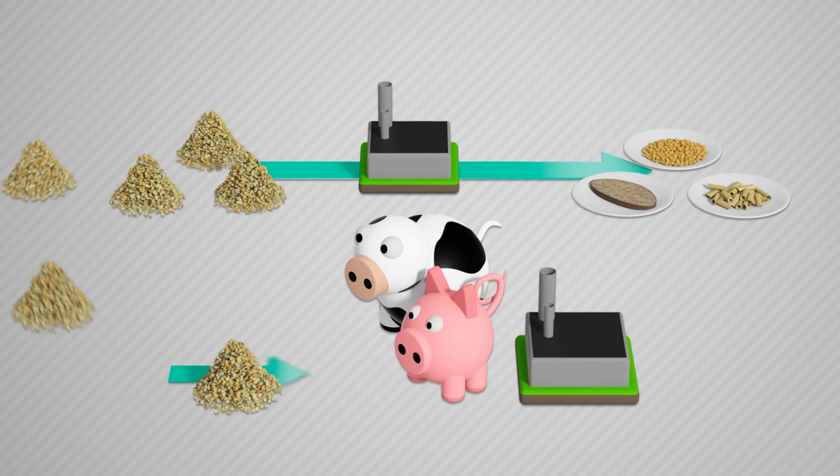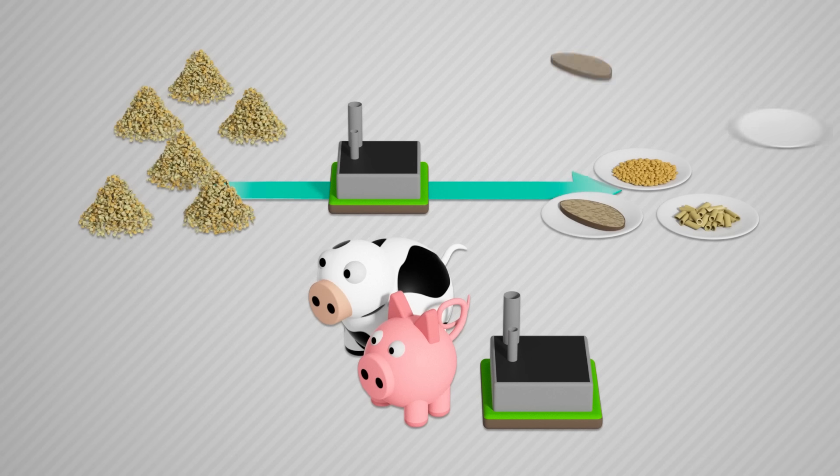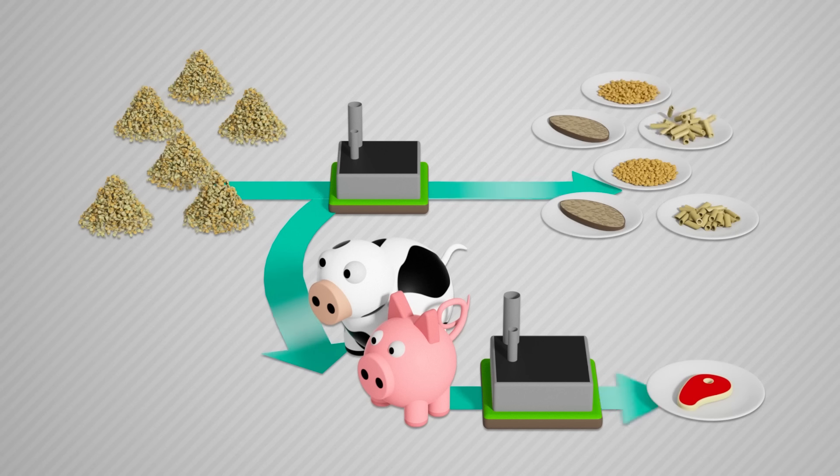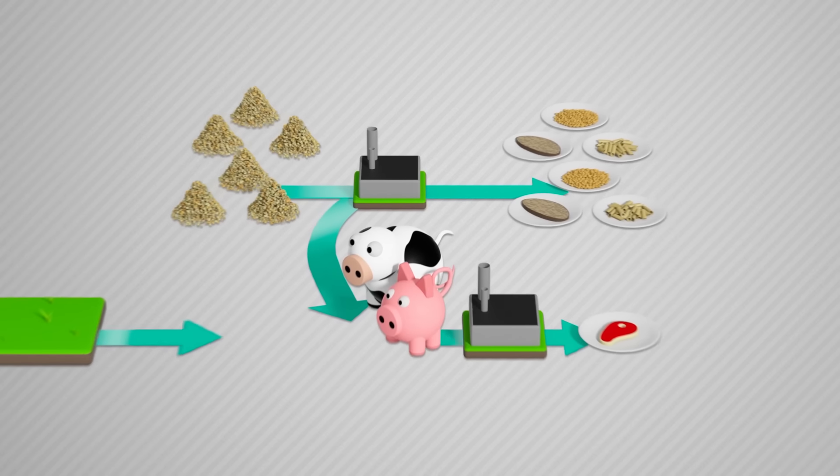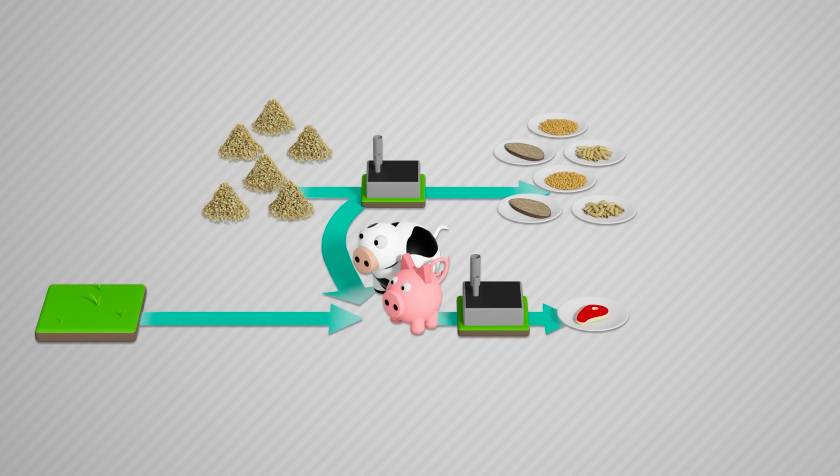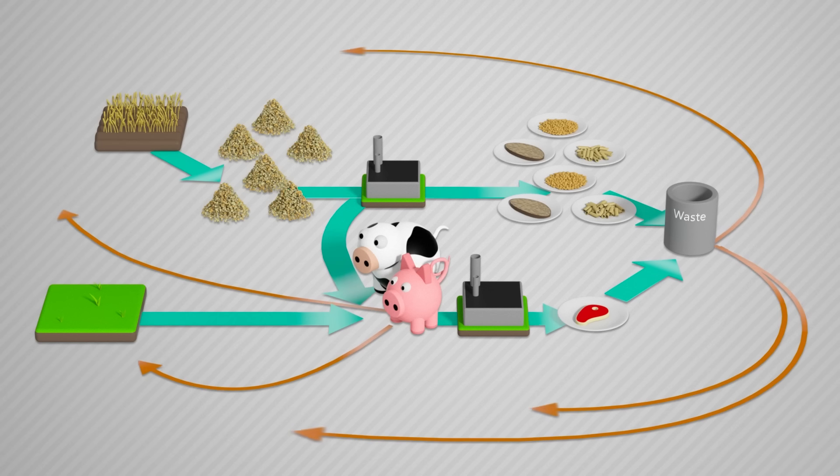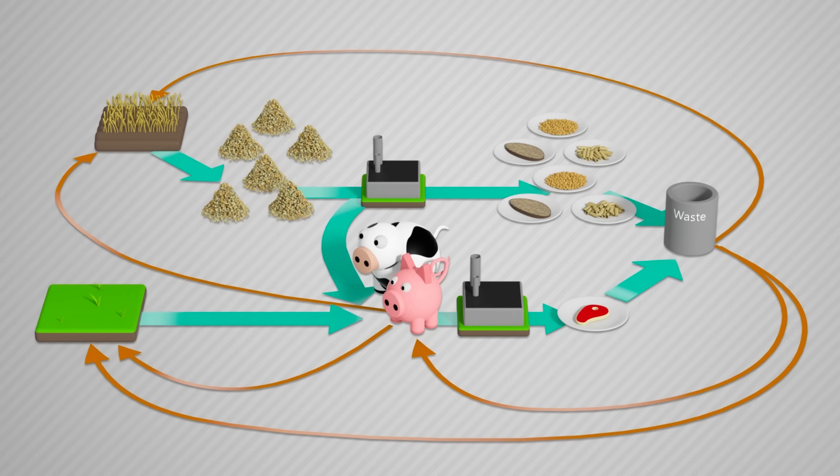Ideally, you would want to grow crops for direct human consumption and feed animals things like leftovers that are not suitable for human consumption, or grass, where grassland is the desired ecosystem. This more circular food system would result in a large reduction of animal products in the diet, especially in high-income countries, where high consumption of animal products is often the norm.